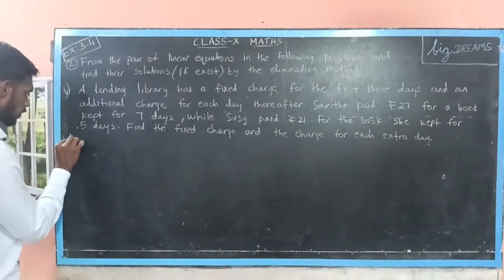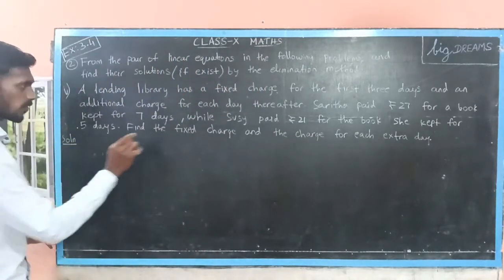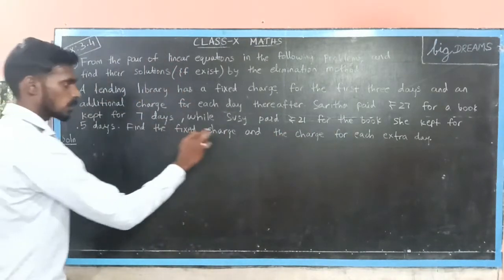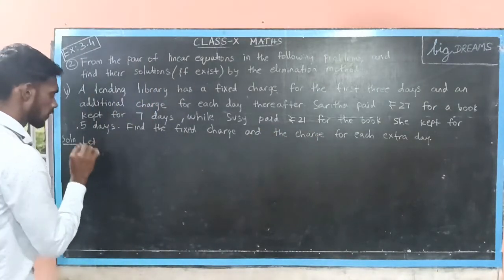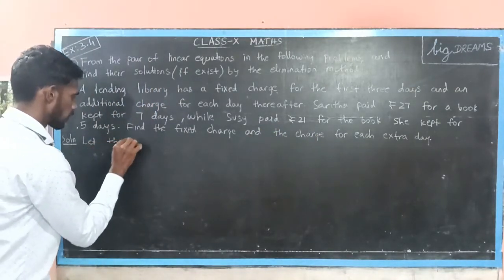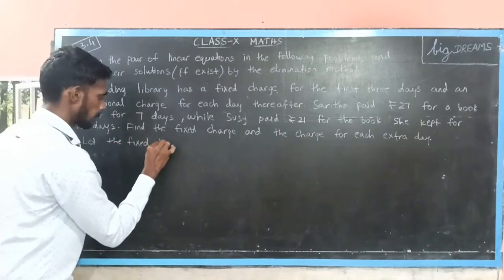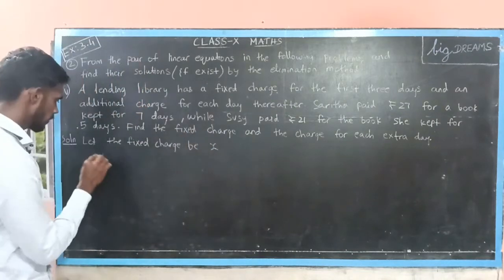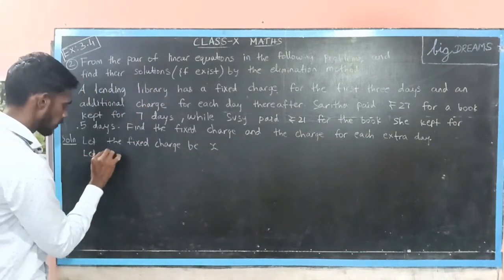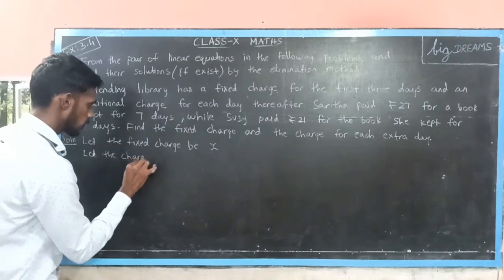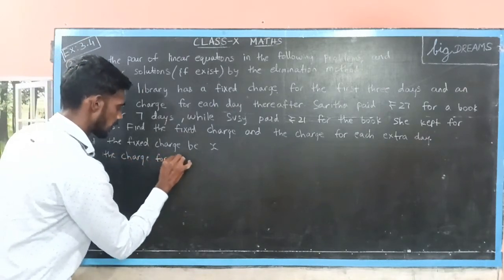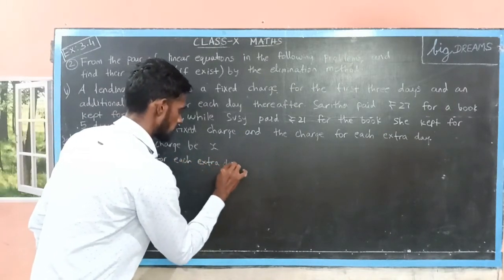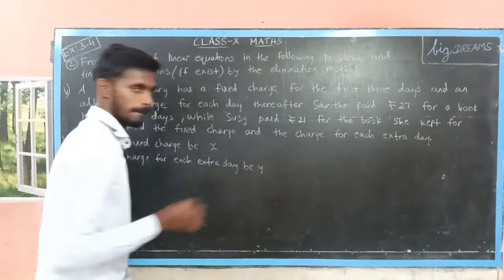Let us move to the solution. We have to find two things: the fixed charge and the charge for each extra day. We do not know both things. So let the fixed charge be x rupees, and let the charge for each extra day be y.